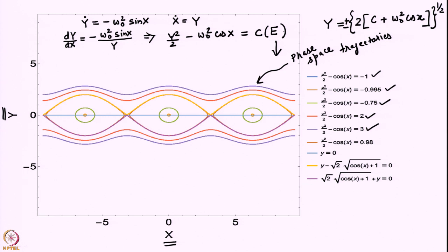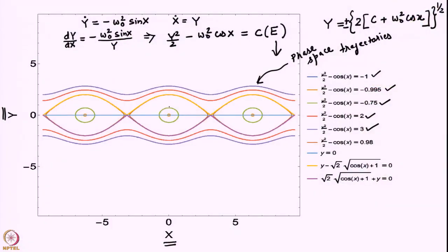By choosing different values of this constant, you are essentially initializing the system with different amounts of energy. Each trajectory corresponds to a certain energy level. If you leave the pendulum at 20 degrees, it oscillates with that energy. At a larger angle it executes a more energetic but still periodic motion. Each of these trajectories has a sense; they go in the clockwise direction.